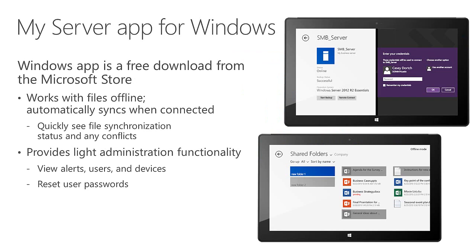Looking at the My Server app for Windows, this is a free download from the Microsoft Store. One of the unique benefits this method provides is the ability to work with files offline and then have those files automatically synchronized back to the Essentials server when you have an internet connection again. As you use the My Server app to access the shared folders on the server remotely, it caches a copy to that particular device, allowing you to work offline. It also provides the same type of light administration functionality as the previous version of the My Server app.